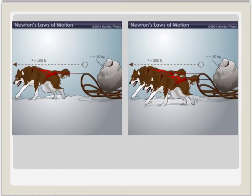If you look at the sled on the right, notice that doubling the force by adding another dog doubles the acceleration. So if the mass of the sled stays at 50 kg, and we assume that the second dog pulls with the same force as the first, which was 100 newtons, the total force would be 200 newtons and the acceleration would be 4 meters per second squared.